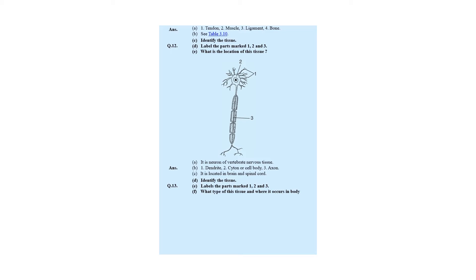Mention the difference between label 1 (tendon) and label 3 (ligament). Tendon attaches muscle to bone, whereas ligament attaches bone to bone. That is the key difference.